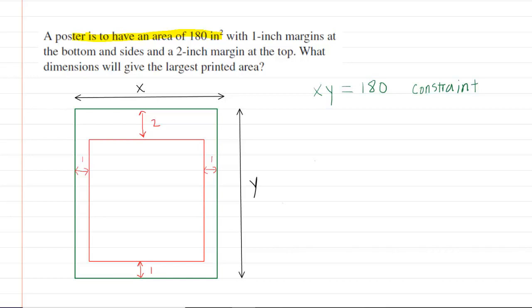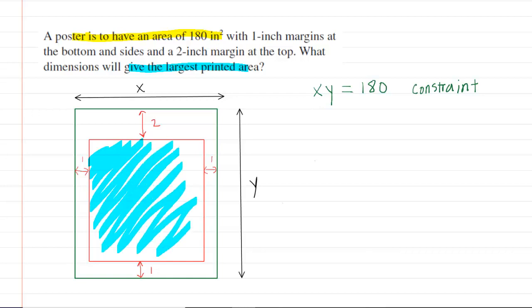We read on and we want dimensions to give the largest printed area. The printed area would be the region that is formed by this smaller rectangle right here.